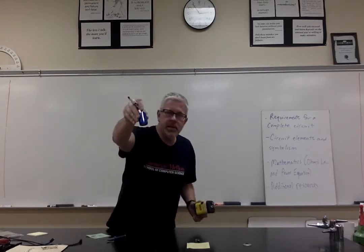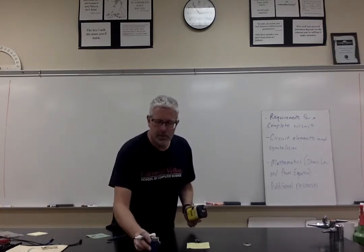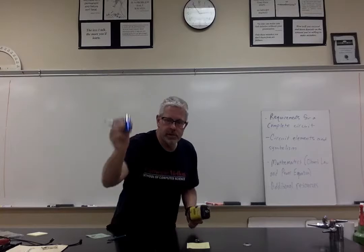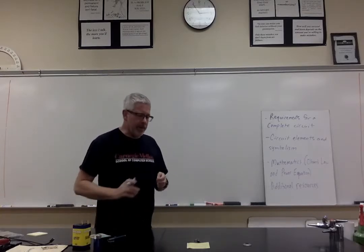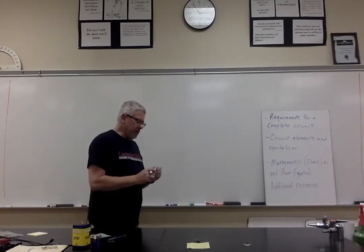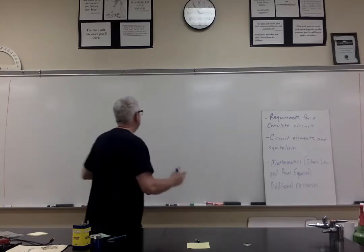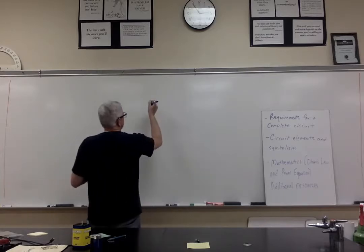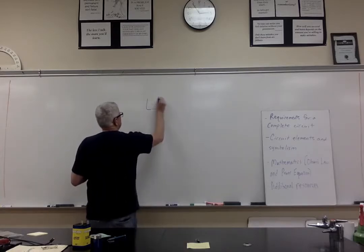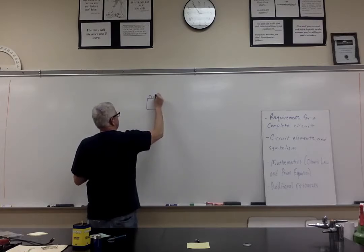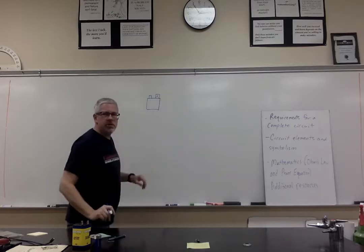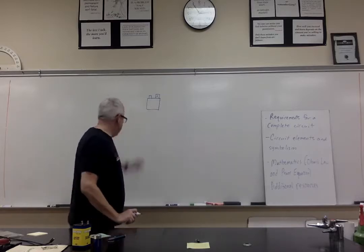This would be a D cell, which is a one and a half volt battery. You've got batteries in your phones, batteries in your watches and things like that as well. Normally what we would think of is a source of energy. We think of one side of the battery as being positive and one side being negative.